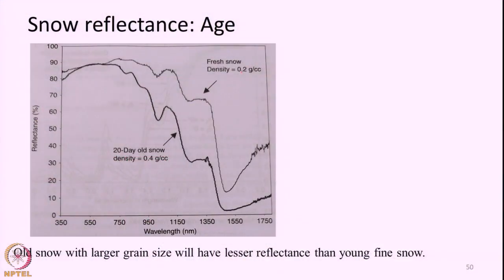An example is given in this particular slide. This is the spectral reflectance of fresh snow with density of about 0.2 grams per cubic centimeter. Here the dark black line shows 20-day-old snow with a higher density. As the snow becomes older it will get more dense and its grain size will increase, leading to a decrease in spectral reflectance observed.